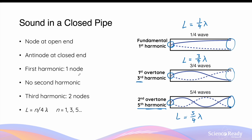Unlike the open pipe, the number of nodes in a closed pipe does not correspond to the harmonic number, because only odd harmonics exist — there is no second, fourth, or sixth harmonic. A useful way to remember this is the formula L = (n/4)λ, where n is an odd positive integer: 1 for the first harmonic, 3 for the third harmonic, and 5 for the fifth harmonic. So the lengths are λ/4, 3λ/4, and 5λ/4 respectively.